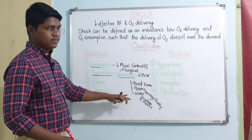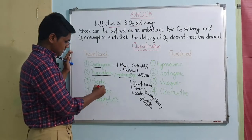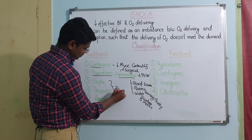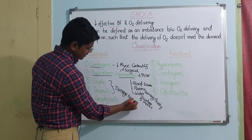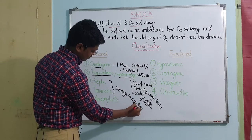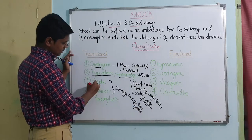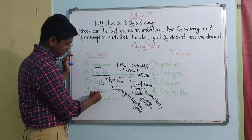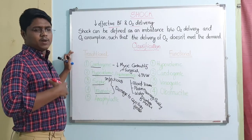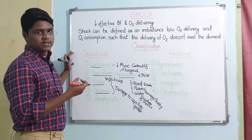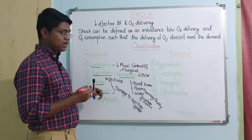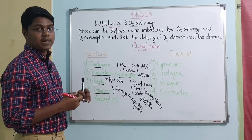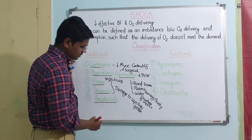Next is septic shock. In septic and traumatic shock there is damage to the capillary system. In septic shock it is mostly because of infectious origin. In traumatic shock, for example if an animal has been bitten hard, much of the capillary bed is damaged, so there will be less venous return, which leads to hypovolemia. This inflammatory response causes hypovolemia, which I will discuss in the vicious cycle.